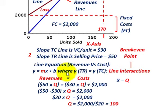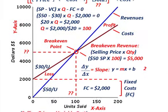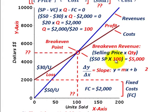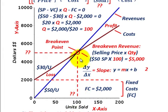Break-even revenue from the line equation: $50 selling price × 100 units = $5,000. Both methods confirm the break-even point at 100 units sold and $5,000 in revenues or costs.